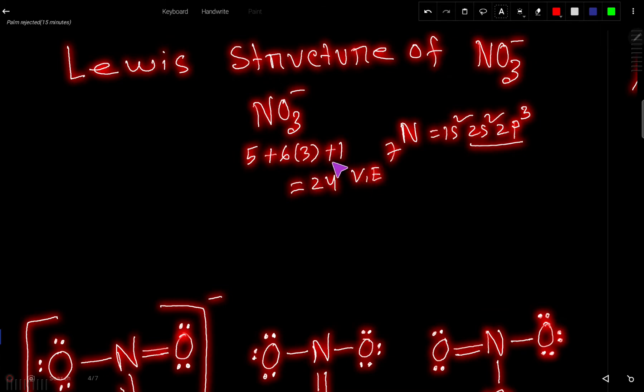This 24 valence electrons has two tasks at the same time. The first task is to connect these four atoms together and the second task is to satisfy the octet for all the atoms.